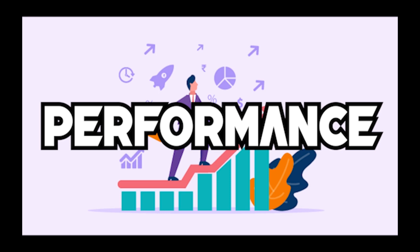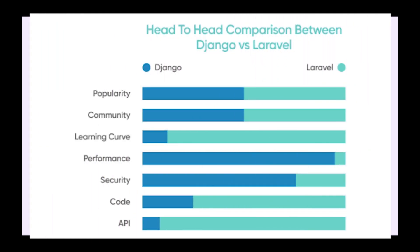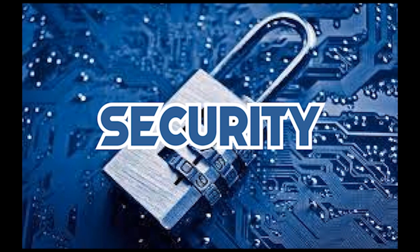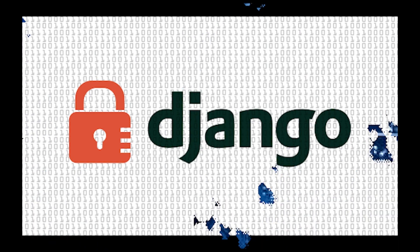Performance: Django is much faster than Laravel. For example, in a 2018 JSON serialization test, Django performed 69,000 JSON responses per second. Laravel is far behind in terms of speed — in the same test it performed only 8,000 responses per second. So in terms of speed, Laravel loses the battle.